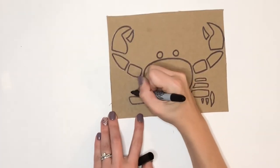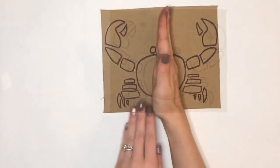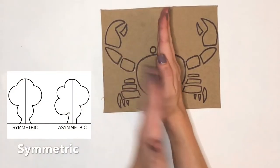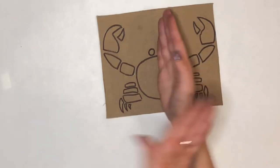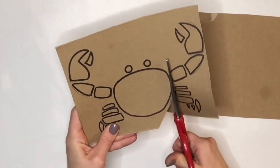So now you have three different ways that you know you can transfer your image from your drawing on your piece of paper onto your piece of cardboard. And now that my crab is fully drawn I can see that it is symmetric, it is even on both sides, and I am ready to then cut out and glue onto my next piece of cardboard.